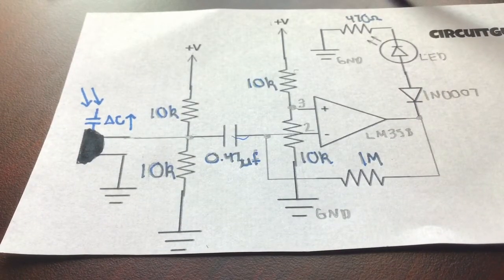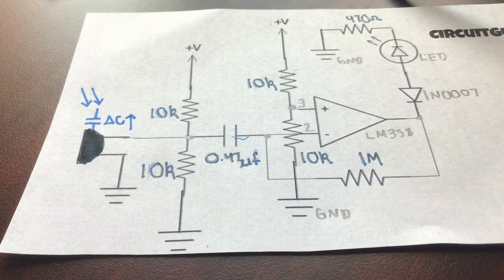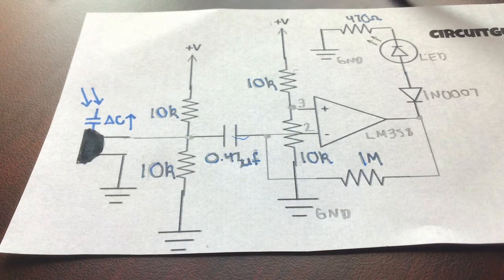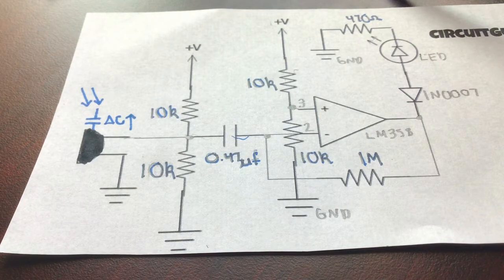A condenser microphone changes its capacitance based on the sound it receives. For example, if it receives a lot of sound, the capacitance increases and gets sensed by the circuit. If there's no sound, then it won't get sensed by the circuit and then the LED will turn off.